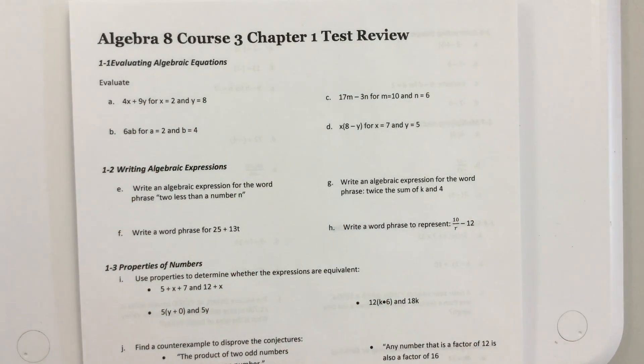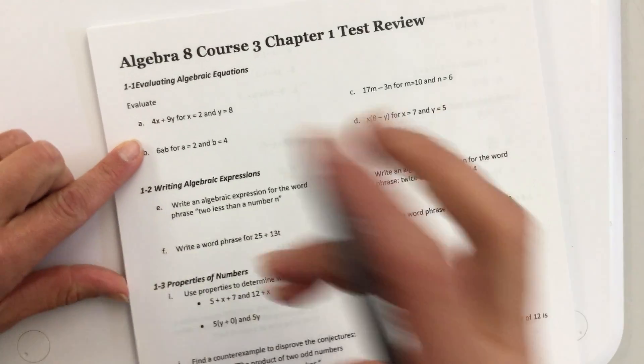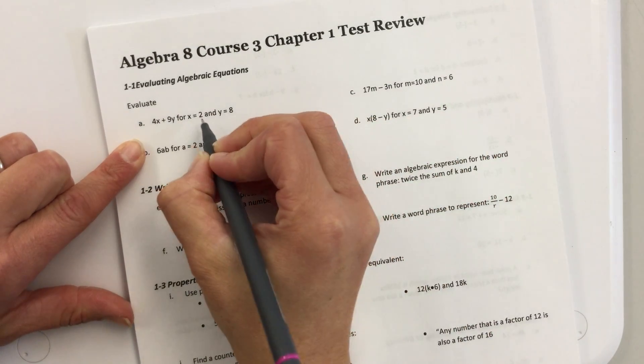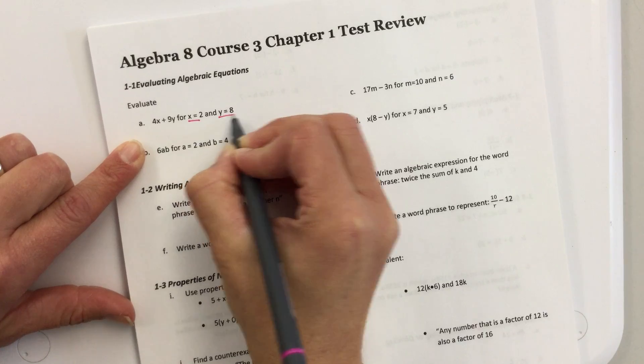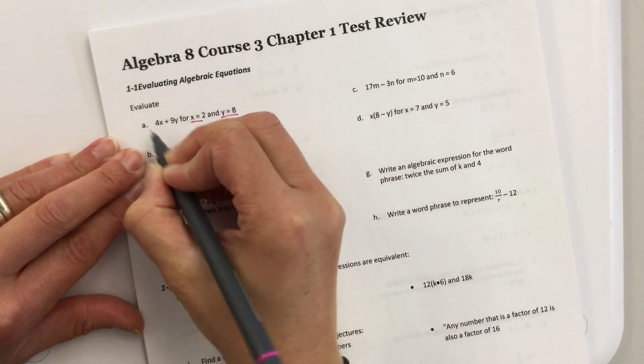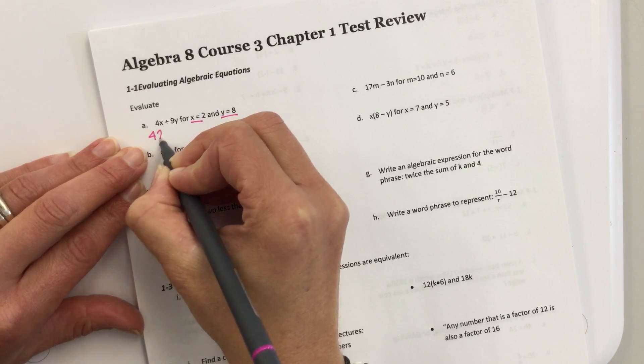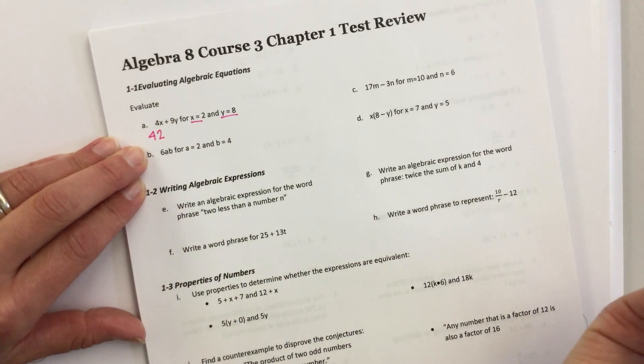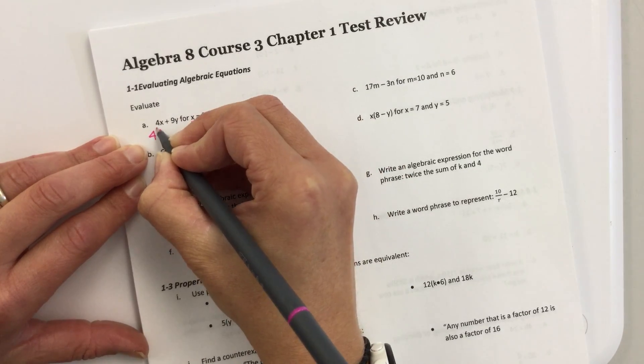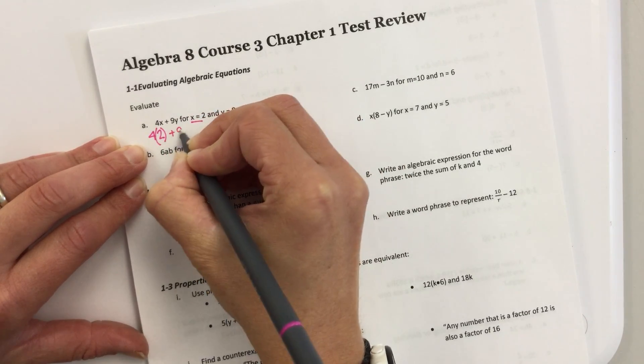So, the first section, we were just evaluating algebraic expressions, basically. They told you what x and y were. You just have to put them into the expression. So, this one would be 4 times 2, right? If a number and a letter are touching, they are actually being multiplied.